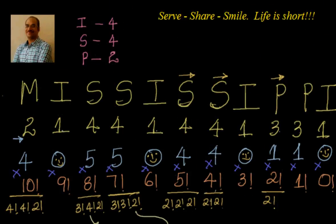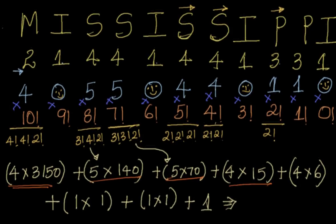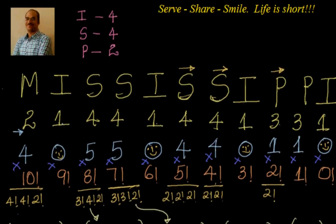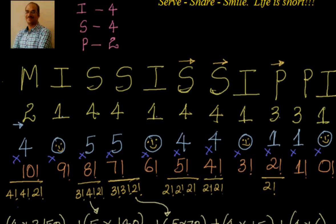That is how you can use the shortcut method to find the rank of a word. To summarize the steps: First, rank the letters alphabetically. Second, for each position look to the right and count how many numbers are less than the current one. Third, from right to left assign factorials starting from 0 factorial. Finally, take care of repetitions by dividing by the factorial of the count of each repeated letter to the right. Multiply and add everything together to get the rank of the word. The rank of Mississippi is 13737. Thanks for your time and support — please do let me know your feedback. Bye for now.